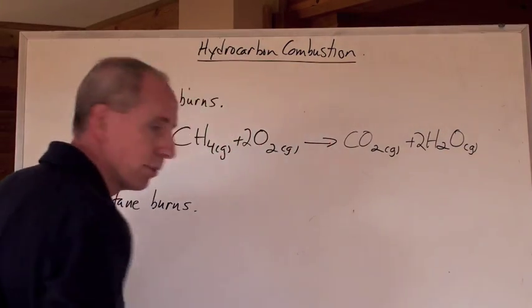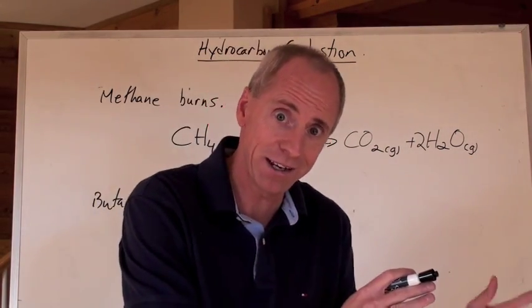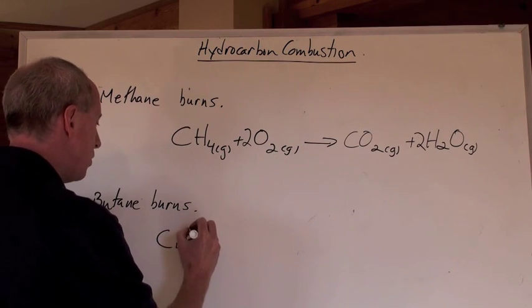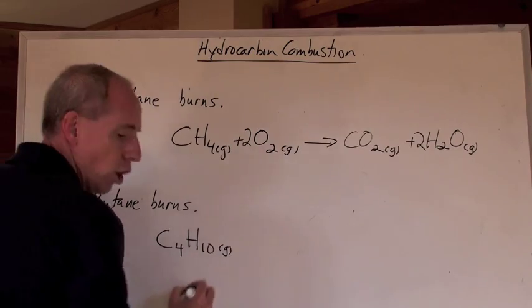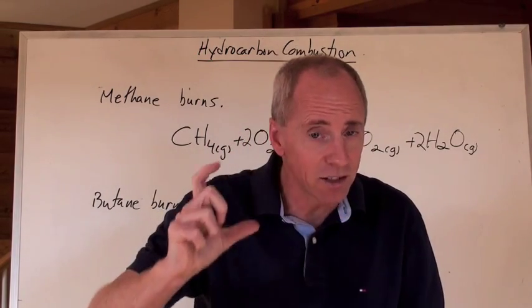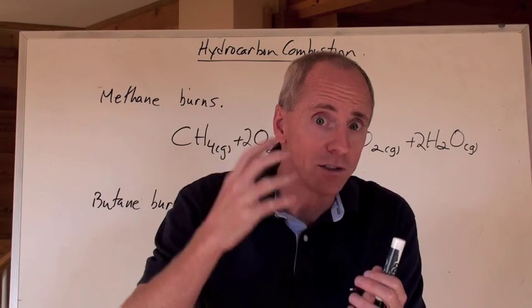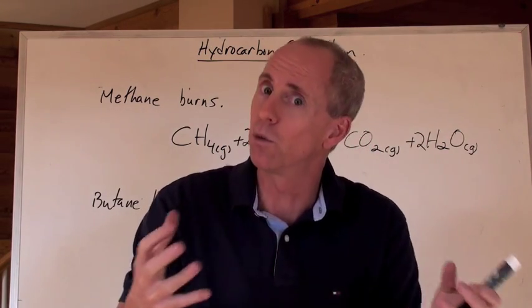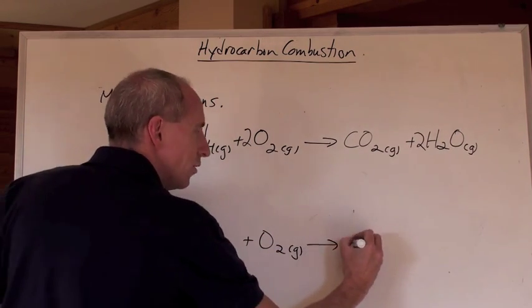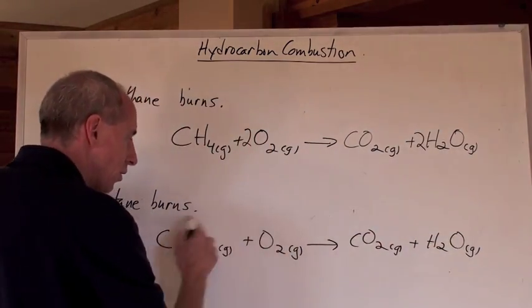Now look at the next one — butane burns. You need to be told that formula. Butane is C₄H₁₀, which is a gas at room temperature. In a butane lighter it's under pressure as a liquid, but when you release the valve, it comes out as gas. Normally at room temperature it's a gas. So: C₄H₁₀ plus O₂ gas makes CO₂ gas plus H₂O gas. You always get that when you undergo hydrocarbon combustion.